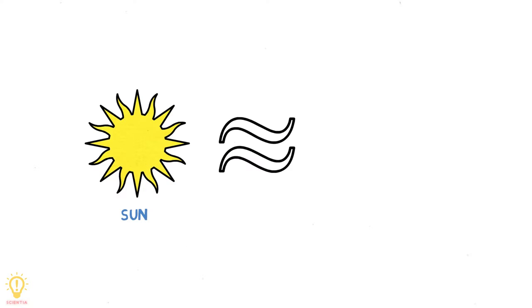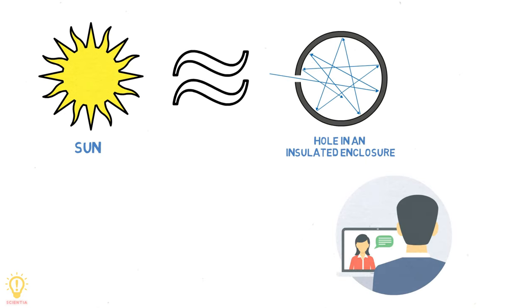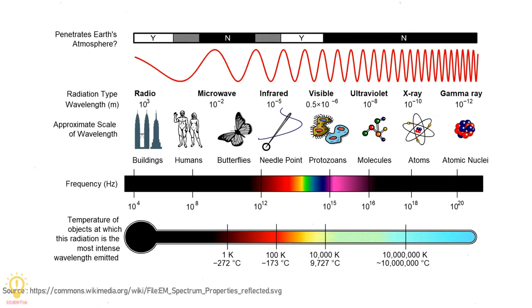Ever wondered why the Sun is considered a close match for a black body? Watch the entire video to know why. All objects emit electromagnetic radiations according to their temperature. Colder objects emit waves with very low frequency, while hot objects emit waves with higher frequencies.